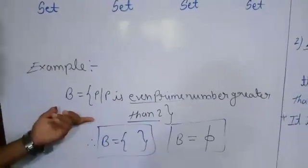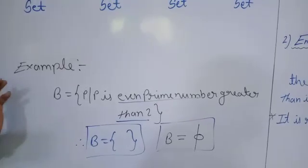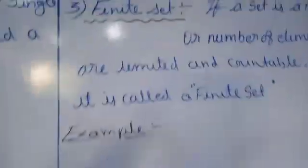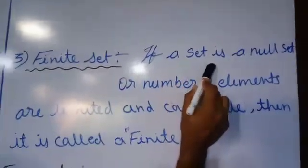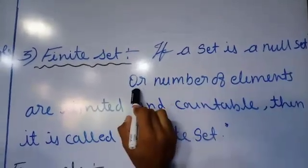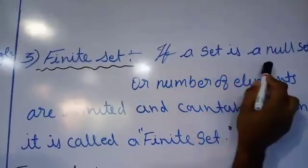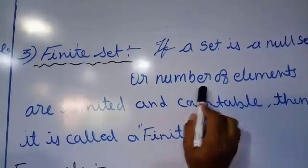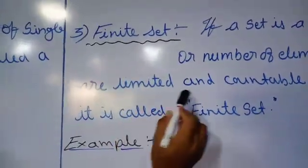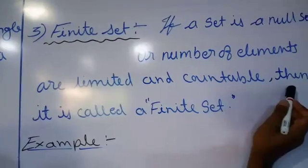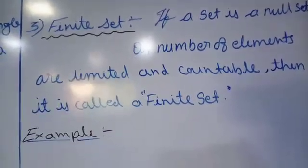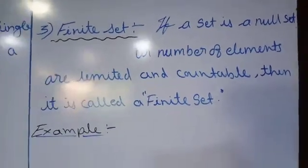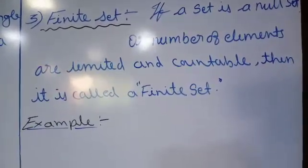If we don't have any element, that is called the empty set or null set. Now, finite set: if a set is a null set, or if the number of elements are limited and countable, then it is called a finite set. If we have a limited number of elements and we are able to count them, those are called a finite set.